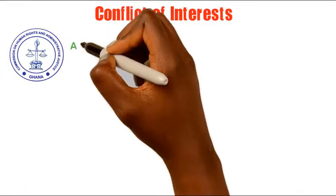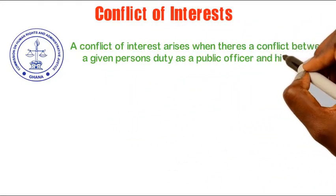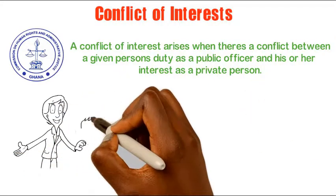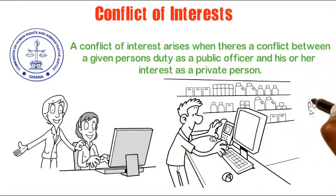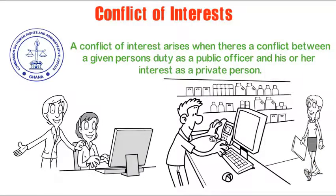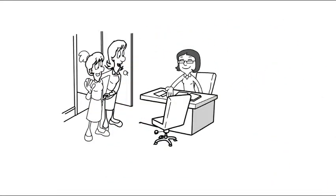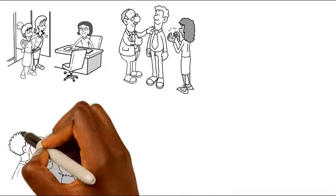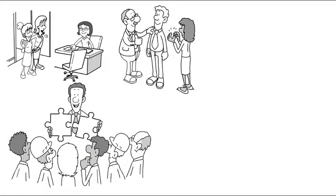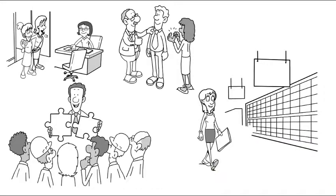Conflict of interest. According to CHRAJ in a guideline on Conflict of Interest, a conflict of interest arises when there is a conflict between a given person's duty as a public officer and his or her interest as a private person. Assuming in Scenario 5, the government officer not only employs her cousin, but also drives out frequently to attend to a supermarket she owns in town — there would be two instances of conflict of interest. First, employing her cousin conflicts with her public duty to employ competent people. Secondly, attending regularly to her supermarket would conflict with her daily duties as a government officer.